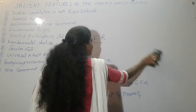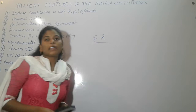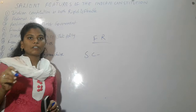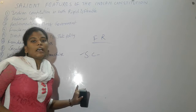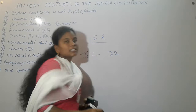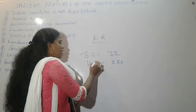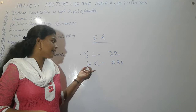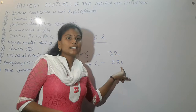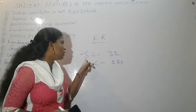If a violation of fundamental rights occurs, a person can directly go to the Supreme Court under Article 32, which provides constitutional remedy. Under Article 226, a person can directly go to the High Court if fundamental rights are violated.